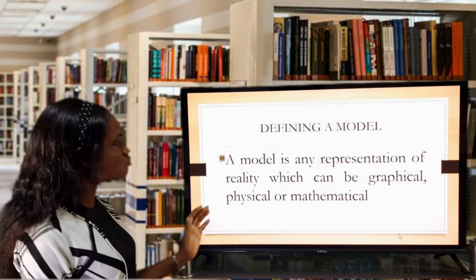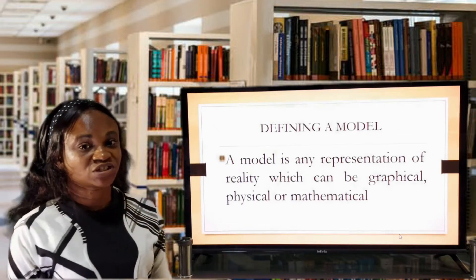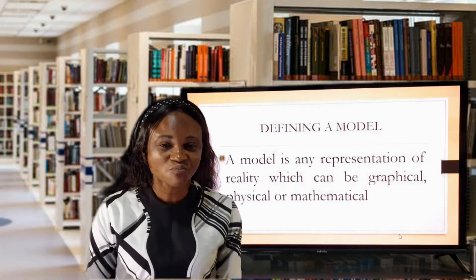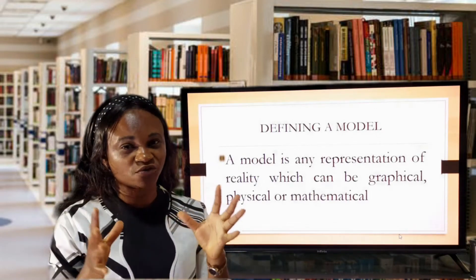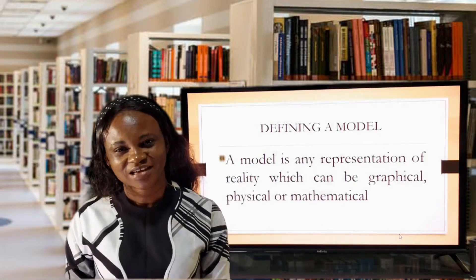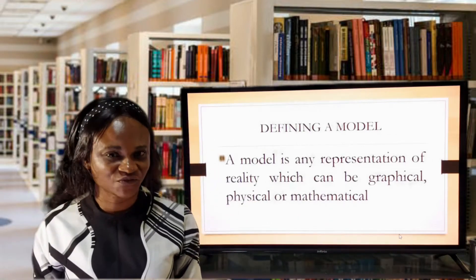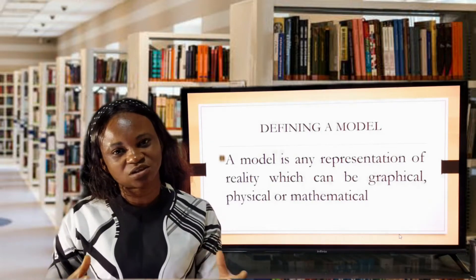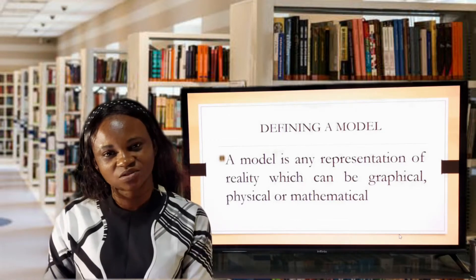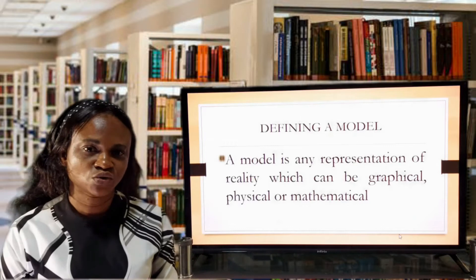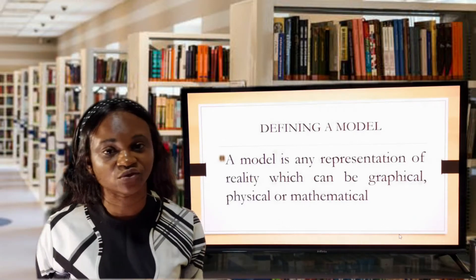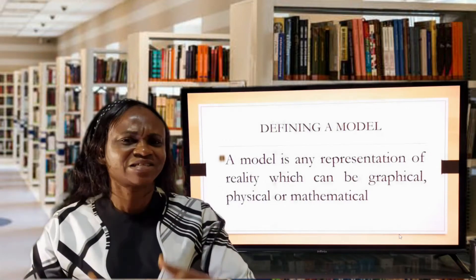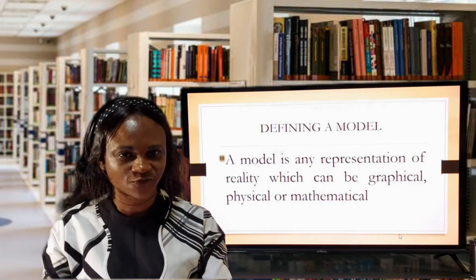By way of definition, a model is any representation of reality, which can be graphical, physical, or mathematical. A model is a representation of the reality of a real-life situation, even graphically, mathematically, or physically. When you try to examine the inequality amongst contributions from different firms or different organizations, we use a chart known as the Lorenz curve to measure the skewness of the distribution. That is a graphical display and that is also a form of model.